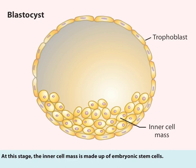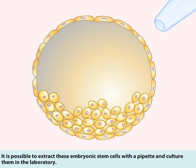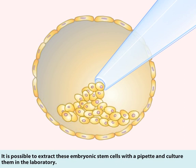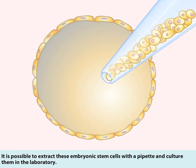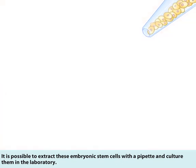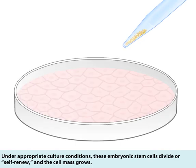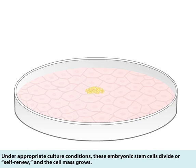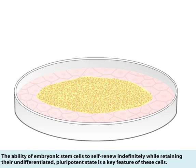At this stage, the inner cell mass is made up of embryonic stem cells. It is possible to extract these embryonic stem cells with a pipette and culture them in the laboratory. Under appropriate culture conditions, these embryonic stem cells divide or self-renew and the cell mass grows. The ability of embryonic stem cells to self-renew indefinitely while retaining their undifferentiated pluripotent state is a key feature of these cells.